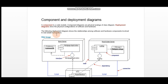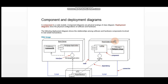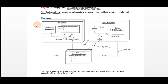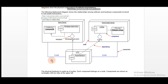The following deployment diagram shows the relationships among software and hardware components involved in real estate transactions. In the following deployment diagram, software and hardware components show a relationship. We will see what the diagram looks like. Basically we have here a diagram that is related to real estate transactions, so in these components we have some physical hardware and some components.